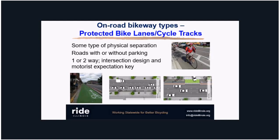Protected bike lanes, also called cycle tracks, are what we're seeing a lot more of in downtown Chicago — downtown Aurora has a prominent one. Essentially this is like a side path on a dense urban roadway, where it's part of the same pavement but with physical separation, whether bollards, a raised median, or other barriers. That physical separation significantly adds to the perceived comfort level for a much broader range of cyclists, and we're seeing great results around the country in dense urban cores.